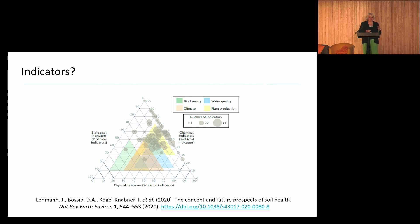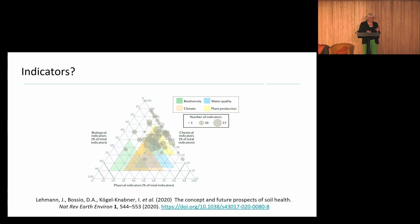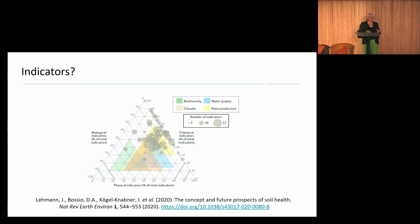This graph depicts all the soil health indicators that have been used across global soil assessment schemes. The grey circles represent indicators, and the size of the circle reflects the number of indicators. You can see immediately there's a real overpopulation of indicators towards the chemistry side, and very little on the biological and physical sides.